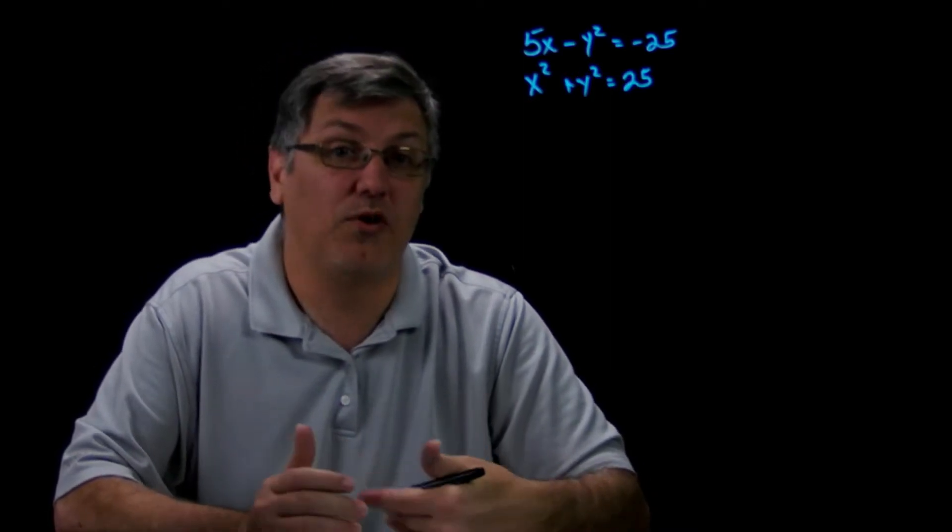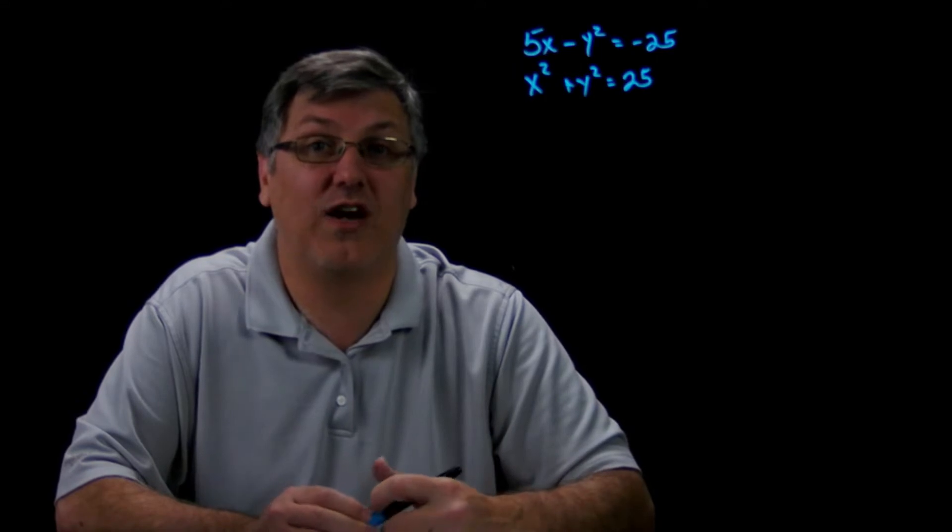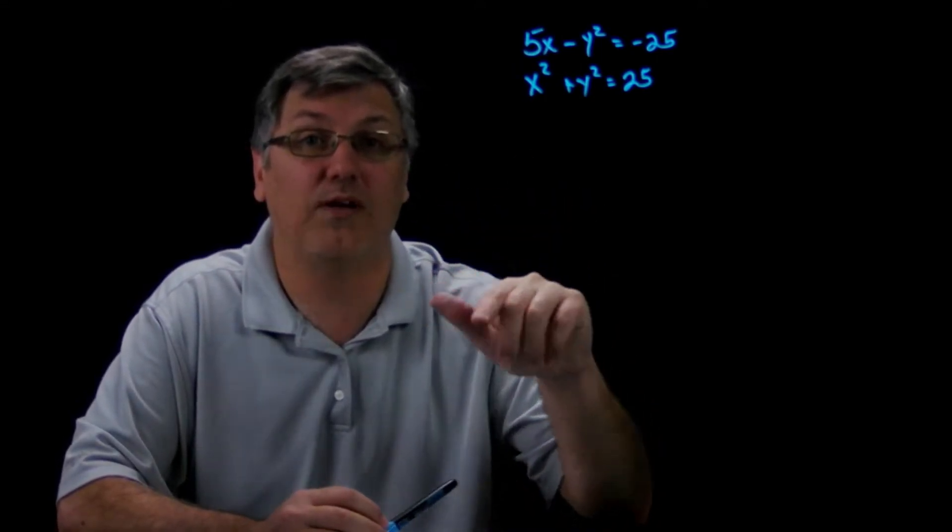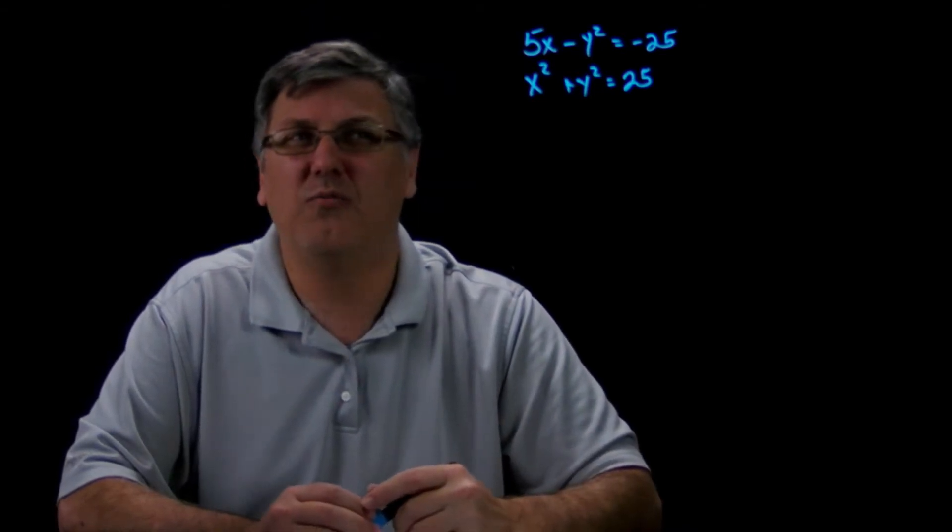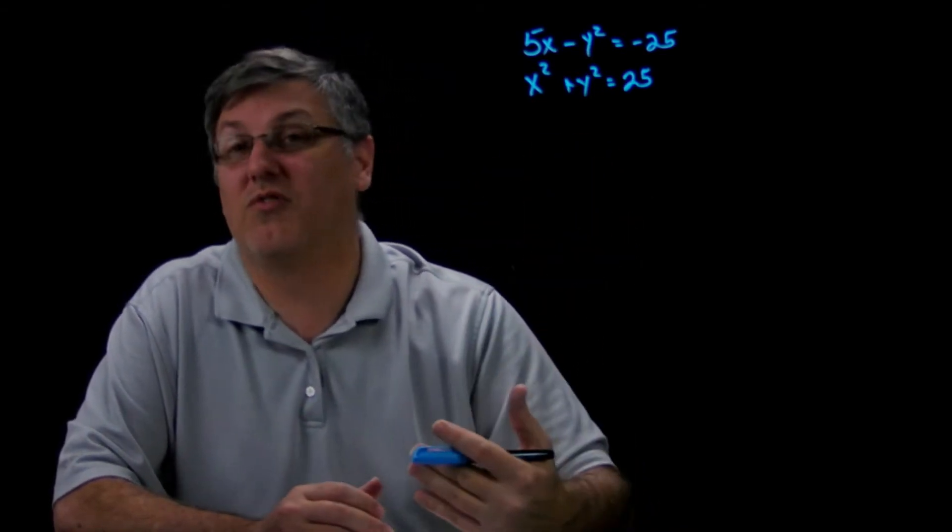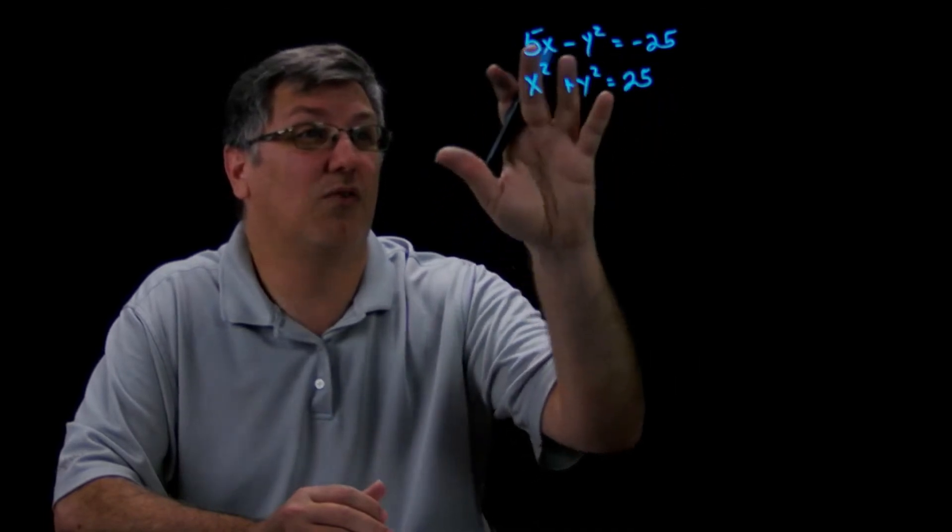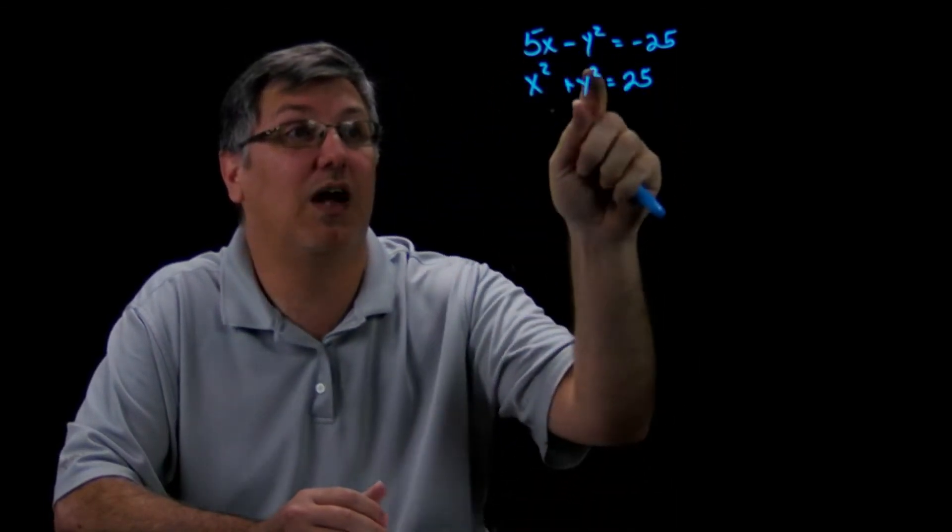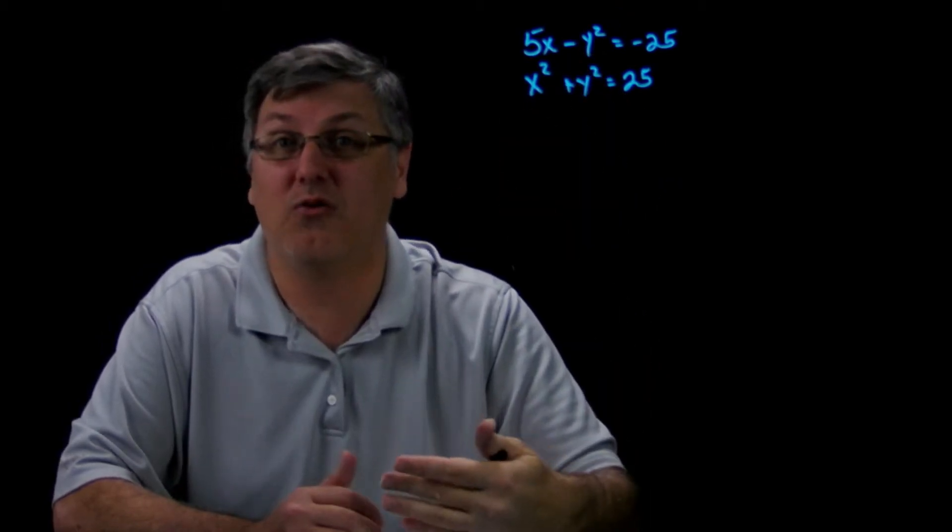If you remember from our sections on parabolas, this means this is a sideways opening parabola, not a normal parabola going up and down. It's a little more complex, so we could do the substitution method, but you can see it's going to get a little more complicated. If I would do substitution method I would probably substitute y squared in and go from there.